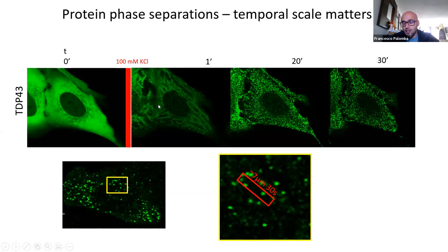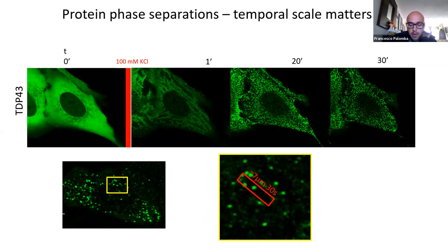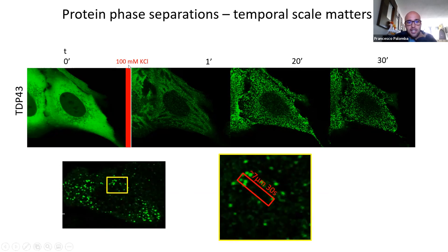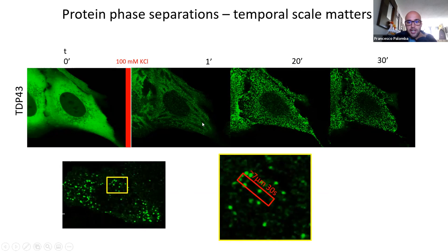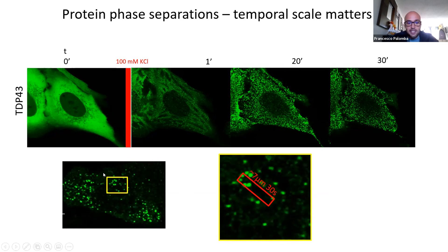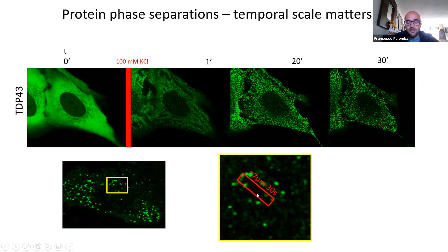What does protein phase separation look like? For instance, TDP-43 is a protein that can phase separate, and this phase separation seems to be involved in frontotemporal dementia. Upon adding stress — increasing the ionic strength — you can see the formation of puncta. These puncta are liquid-like at the beginning; indeed, they coalesce. Over time, the number of phase separations decreases but the size is increasing. These protein phase separations are moving; this one seems to be shuttled by some kind of molecular machinery.